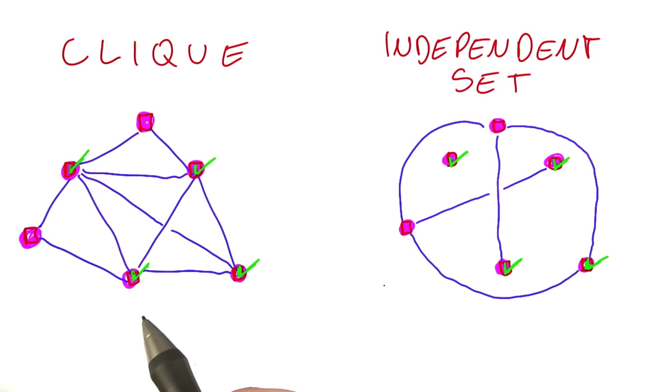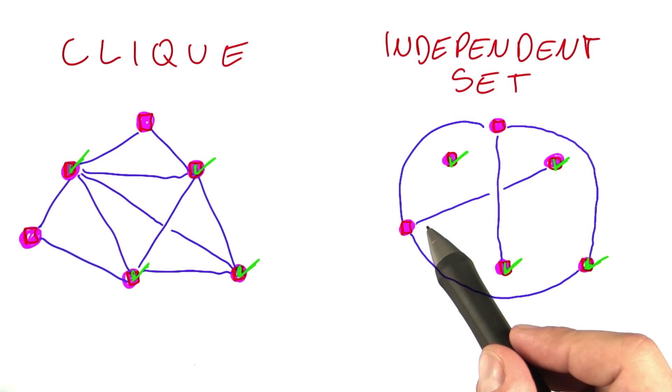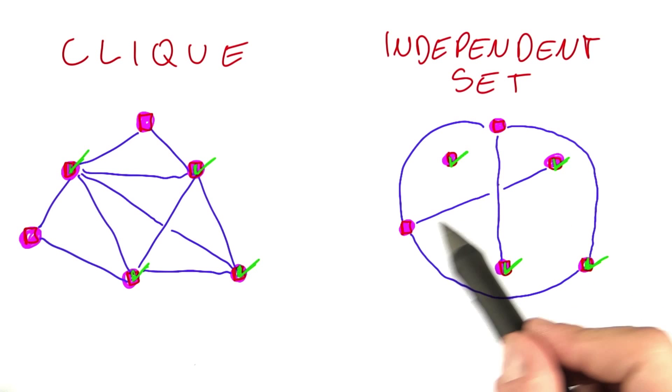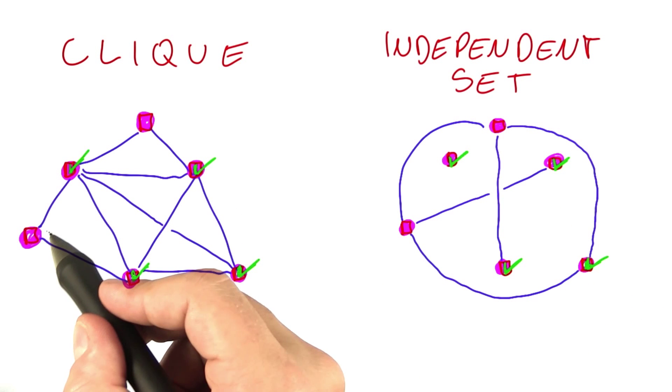And to show you this relationship, I will do the following. For each of the edges that is blue over here, I will draw in here and I will color them black.